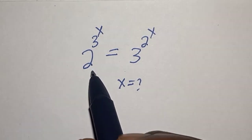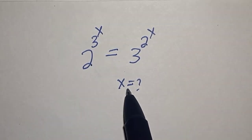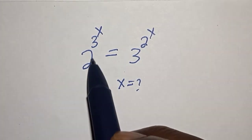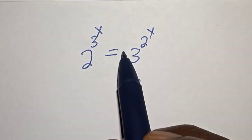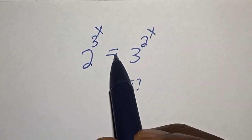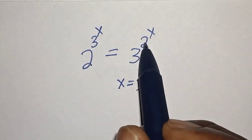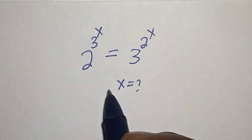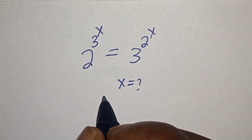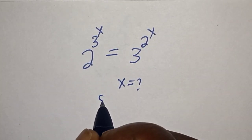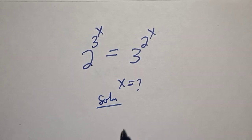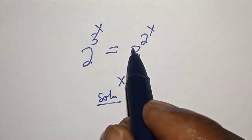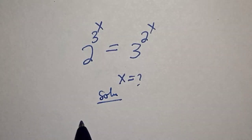Hello, welcome to Magic. In this class we want to find the value of s from this equation: 2 to the power of 3 to the power of s is equal to 3 to the power of 2 to the power of x. Like, share, comment and subscribe. Solution: let's take the natural log of both sides.